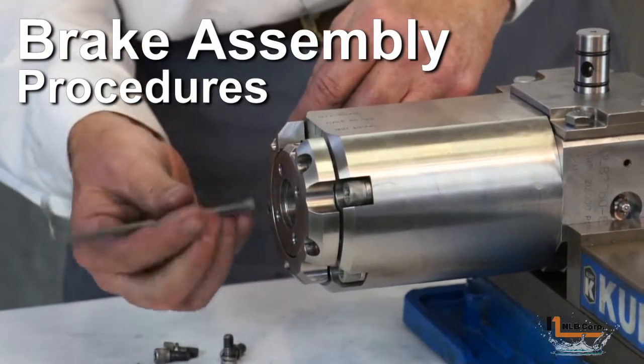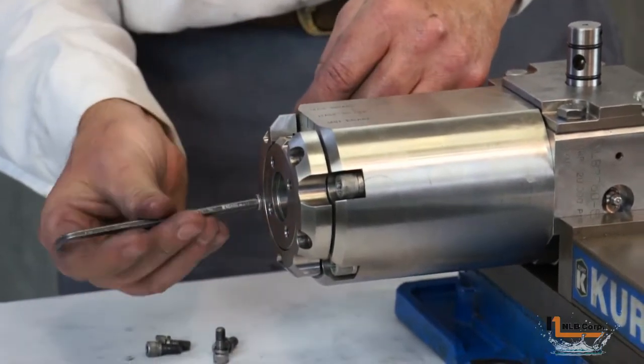To remove the lower brake assembly, place the Torrent 50 in a vise with the output shaft facing up.